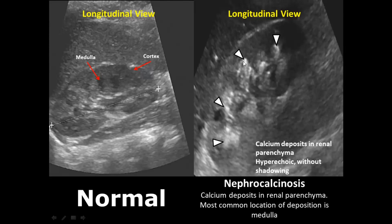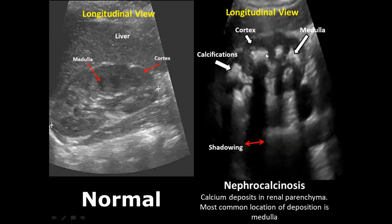Nephrocalcinosis is a condition in which calcium is deposited in the renal parenchyma. The most common location is the medulla, and we can see the hyperechoic regions — these are the calcium deposits throughout the medullary regions. The density of the calcifications leads to posterior acoustic shadowing. Another deposit is in the medullary region, occupying the medullary pyramids.